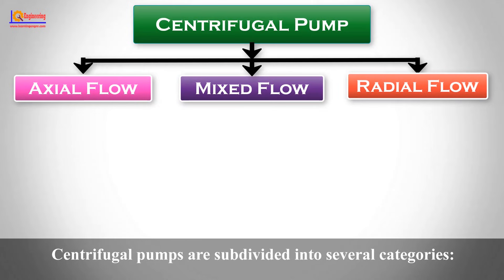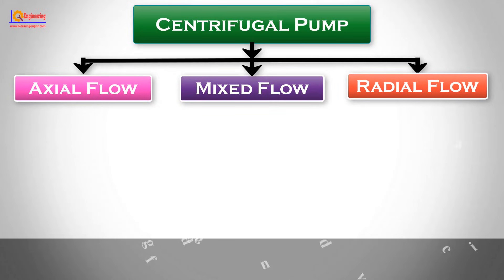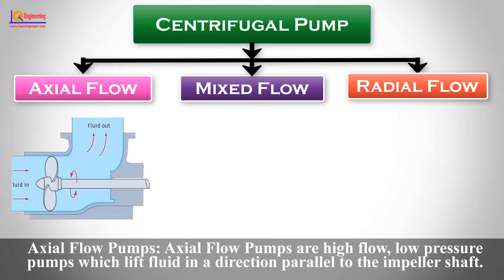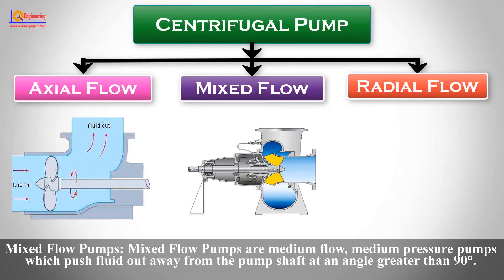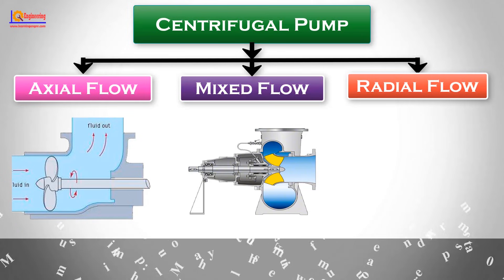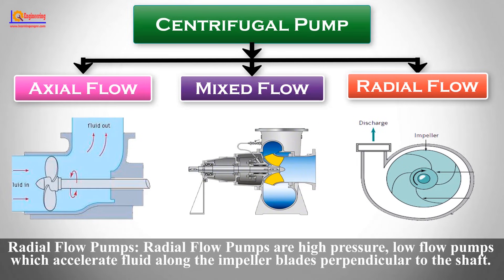Centrifugal pumps are subdivided into several categories. Axial Flow Pumps are high flow, low pressure pumps which lift fluid in a direction parallel to the impeller shaft. Mixed Flow Pumps are medium flow, medium pressure pumps which push fluid out away from the pump shaft at an angle greater than 90 degrees. Radial Flow Pumps are high pressure, low flow pumps which accelerate fluid along the impeller blades perpendicular to the shaft.